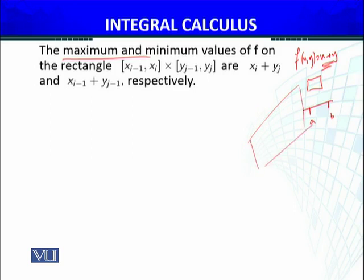The maximum and minimum values of f on the rectangle are xᵢ + yⱼ and xᵢ₋₁ + yⱼ₋₁ respectively.